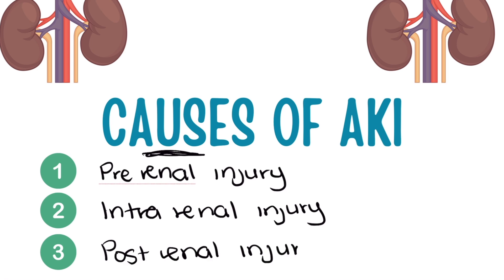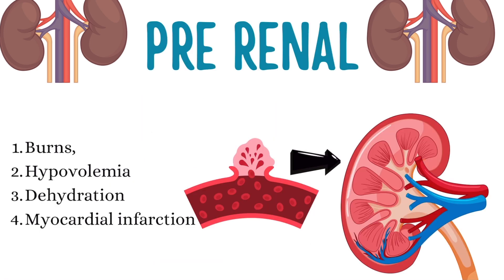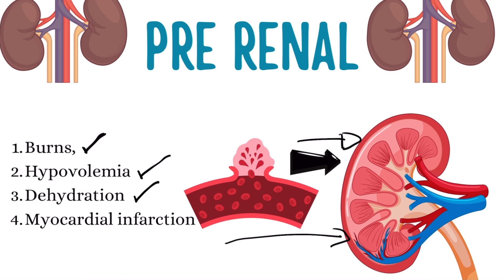Pre-renal injury basically means that there is an injury before the kidneys — there is an issue with perfusion to the kidneys. What can cause this lack of flow or perfusion? Number one, we have burns. When a patient is suffering with burns, this can cause AKI because it's a pre-renal injury. Number two is hypovolemia. Number three is dehydration. And number four is any issue with the heart, such as an MI. All of this can cause that pre-renal injury.